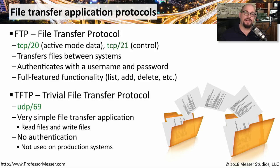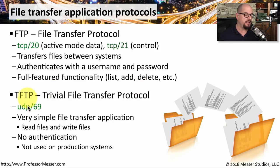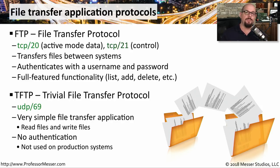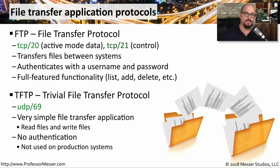If you need a very simple form of file transfer, you may want to use TFTP, which stands for Trivial File Transfer Protocol. It uses UDP port 69. It's a very simple way to communicate because it doesn't require any type of authentication — you won't need a username and password to transfer files. Since there's no authentication and no encryption used for TFTP, it's not something that would be used for important data or used on production systems.